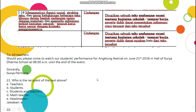Kemudian, next: KD 3.16 Menganalisis fungsi sosial, struktur teks, dan unsur kebahasaan beberapa teks khusus dalam bentuk undangan resmi dengan memberi dan meminta informasi terkait kegiatan sekolah atau tempat kerja sesuai dengan konteks penggunaannya. Ini untuk materi kelas 11 tentang undangan atau invitation. Undangan dibagi menjadi dua: formal invitation dan informal invitation.